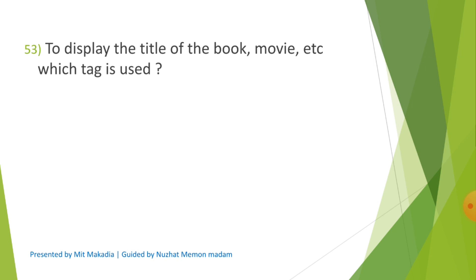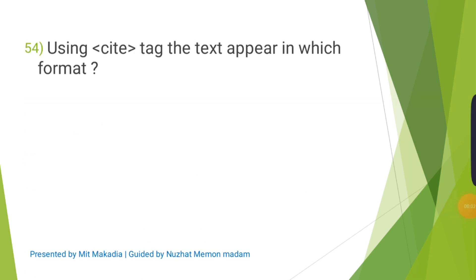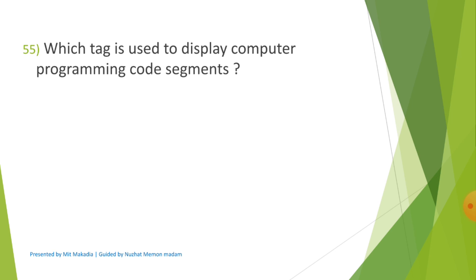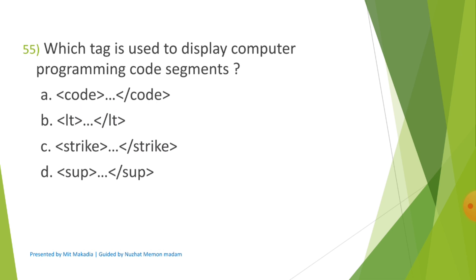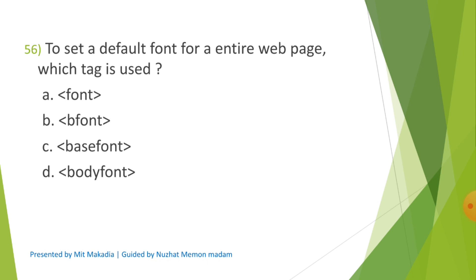Question 53: To display the title of a book, movie, etc., which tag is used? Options are A) Code, B) Strong, C) Cite, D) DFN. The correct answer is C) Cite. Question 54: Using the Cite tag, the text appears in which format? Options are A) Bold, B) Underline, C) Italic, D) All of these. The correct answer is C) Italic. Question 55: Which tag is used to display computer programming code segments? Options are A) Code, B) LT, C) Strike, D) Sup. The correct answer is A) Code. Question 56: To set a default font for the entire web page, which tag is used? Options are A) Font, B) B Font, C) Base Font, D) Body Font. The correct answer is C) Base Font.